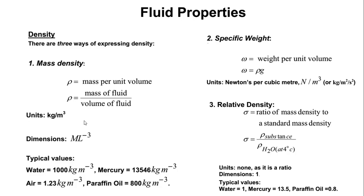As we're still on this chapter, here is a question for you to try: calculate the specific weight, density, and specific gravity of one liter of a liquid which weighs seven Newtons. You can pause this video and try to calculate this problem using the definitions we've covered — it's a simple question to make sure you remember what you've done.